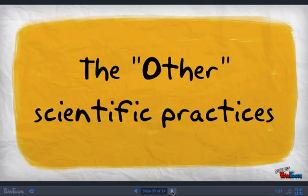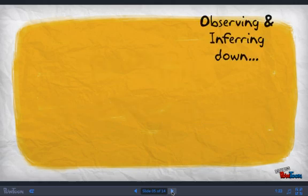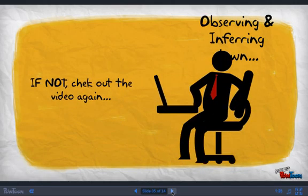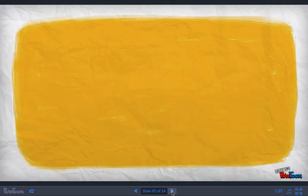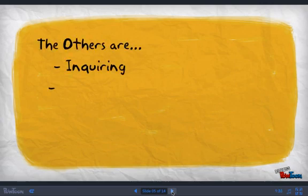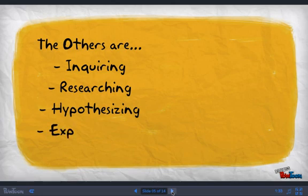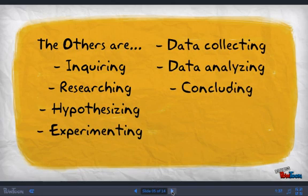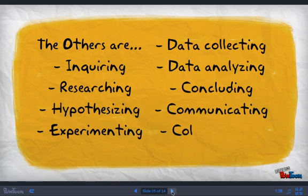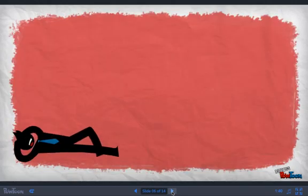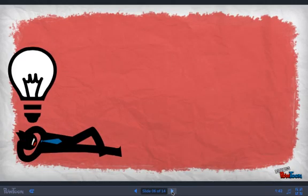the other scientific practices. Observing and inferring, we should have those down, right? I hope so. If not, check out the observation and inference video again, and come and ask me any questions you still may have. The other practices or steps are as follows: inquiring, researching, hypothesizing, experimenting, data collecting, data analyzing, communicating, concluding, and, the one I cut off, got cut off here, collaborating. Let's take a closer look at each.